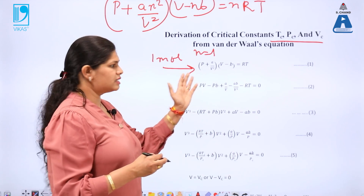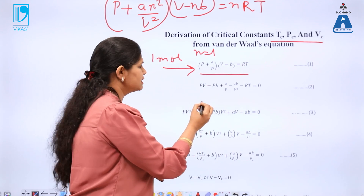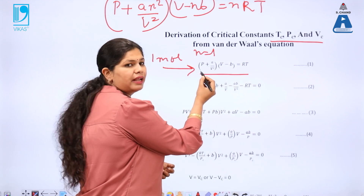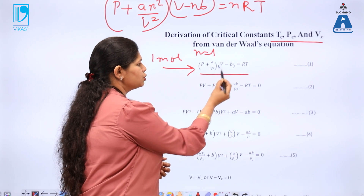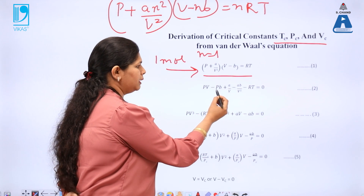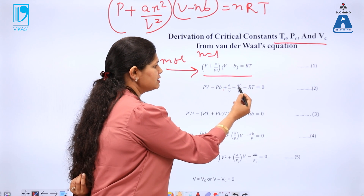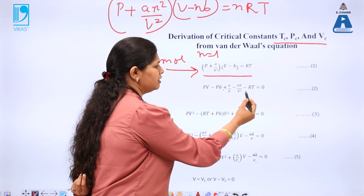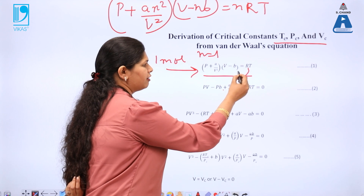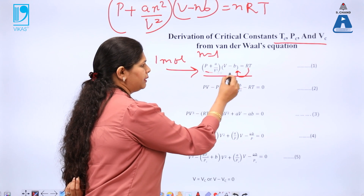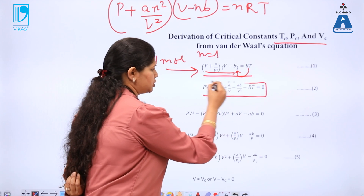First, writing down the equation for one mole of Van der Waals gas and multiplying the two brackets, we get: PV − PB + A/V − AB/V² − RT = 0. Taking RT to one side and multiplying these two brackets gives us this expression.